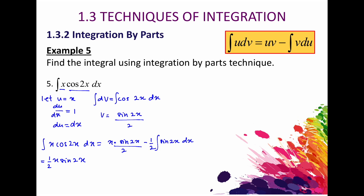Integrating sin 2x gives negative cos 2x, so the negative becomes positive. We then divide by 2 times 2, where the extra 2 comes from the differentiation of 2x, plus C. Simplifying, the final answer is 1 over 2 times x sin 2x plus 1 over 4 cos 2x plus C. That's all the examples for integration by parts.